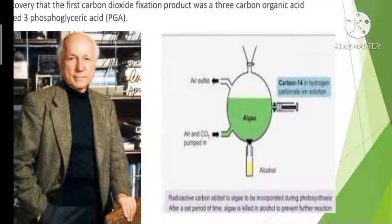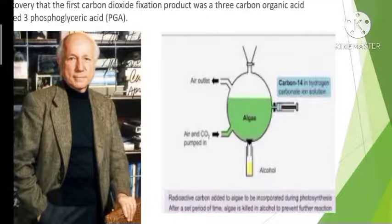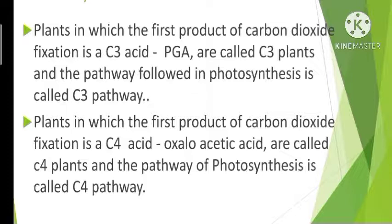Based on his experiment, Calvin found that the first product was 3-phosphoglyceric acid, and he was able to work out the whole biosynthetic pathway. Plants in which the first product of carbon dioxide fixation is a C3 acid are called C3 plants. The C3 acid produced is 3-phosphoglyceric acid, and the pathway followed by them is called the C3 pathway.